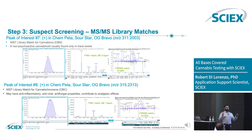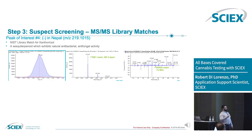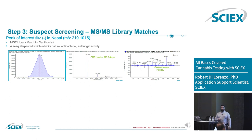A third peak: we had a library match for xanthorazole — not a terpene that commonly targeted GC methods even look for. We see that it was downregulated in the Nepal strain. For all of these, you're getting excellent MS1 matches in terms of mass error.